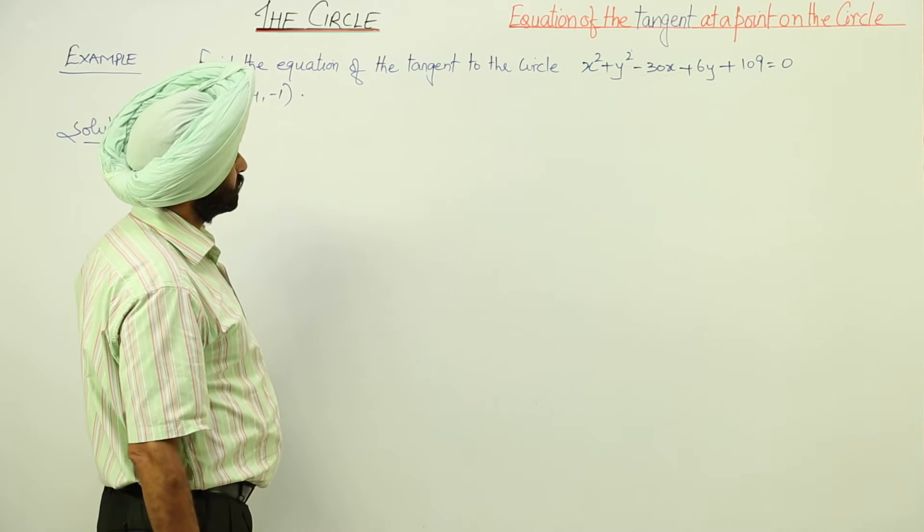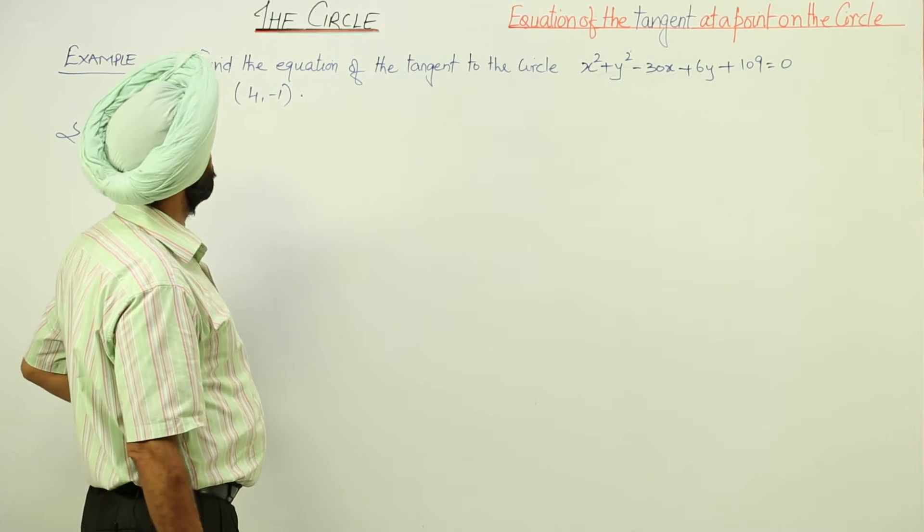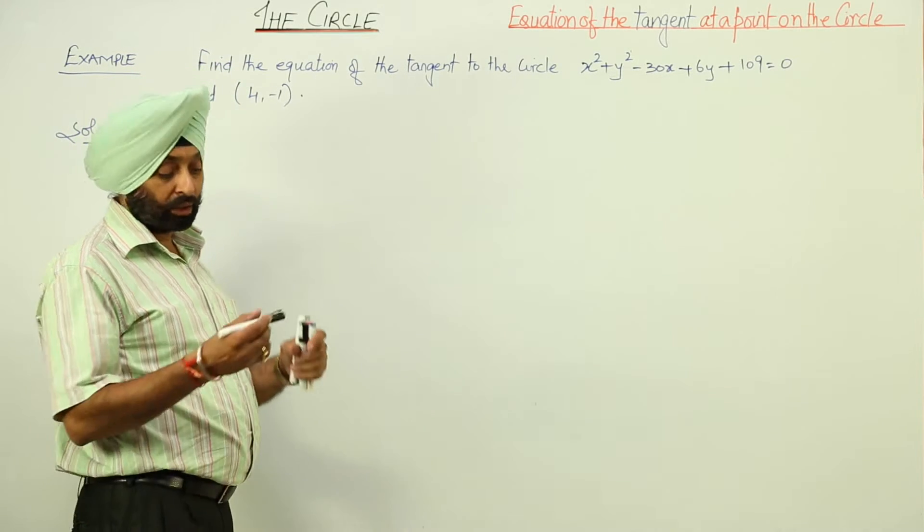Find the equation of the tangent to a circle x² + y² - 30x + 6y + 109 = 0 at the point (4, -1).